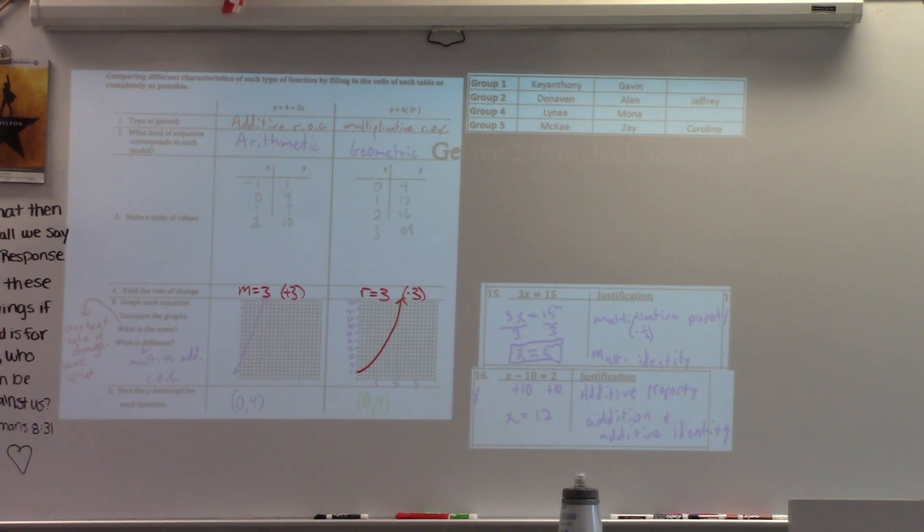What if you put linear? So you could say that it's a linear function, but that's not a type of growth. What makes a linear function linear is that repeated addition, that additive rate of change, right? An arithmetic sequence is defined by an additive rate of change. A linear function is defined by an additive rate of change. The growth itself is additive, repeated addition. Does that make sense? Yeah.